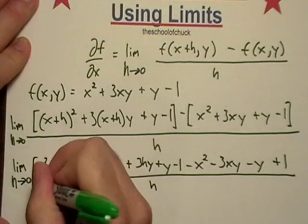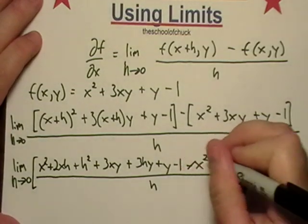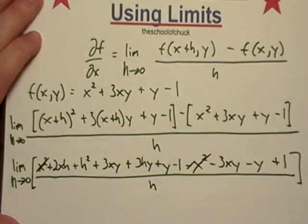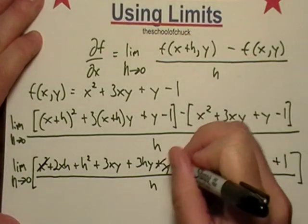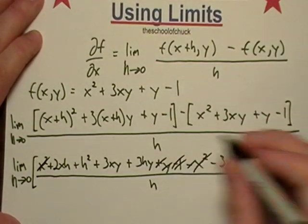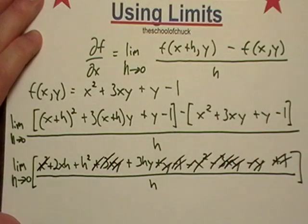And what did we end up with? A big mess. Well, good thing is a lot of this stuff should cancel out. Let's start with the negative x squared, that's gone. Positive y and negative y, that's gone. So is the one. The 3xy, that's gone.